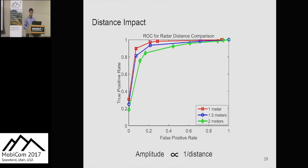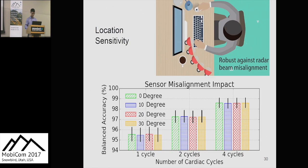We evaluated the system under complex conditions. For distance impact, closer distances yield better performance, since the baseband IQ signal amplitude is inversely proportional to the distance between the radar and subject. For location sensitivity, we collected cardiac signals with orientation misalignments from 10 to 30 degrees, and balanced accuracy remained stable across different degree settings regardless of the number of cardiac cycles.